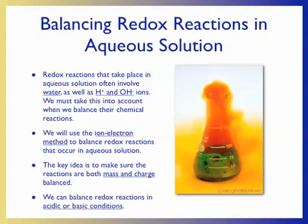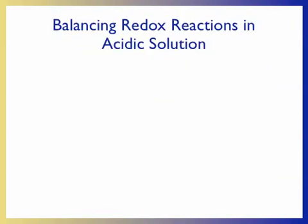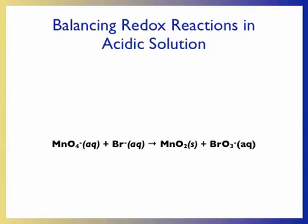We can use the ion-electron method to balance redox reactions that occur under both acidic and basic conditions. We'll start with acidic conditions. As we go through the rules for balancing redox reactions in acidic solutions, we'll use a working example shown on the screen.